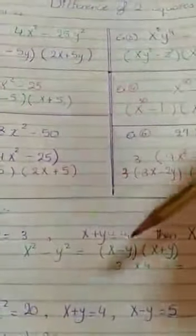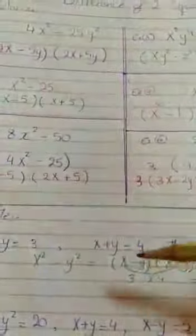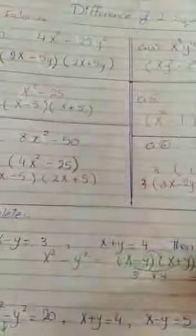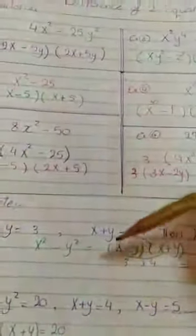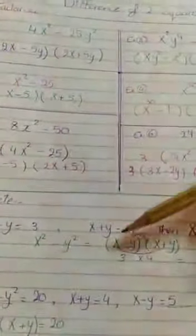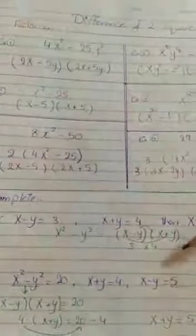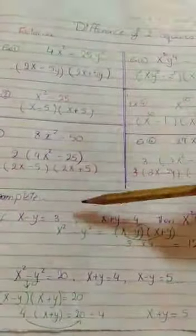First times first, x squared. The middle term, which is negative xy, and here positive xy, the means and extremes will be 0. That's why the difference of two squares gives only two terms only. That's why the answer is x squared minus second times second, which is negative y squared. I'm given that x minus y equals 3, and x plus y equals 4. So I'm going to multiply the two brackets by each other, meaning 3 times 4, and the final answer equals 12.